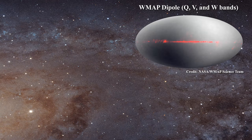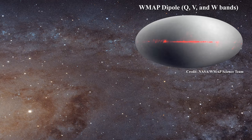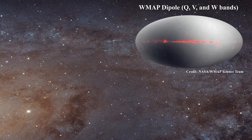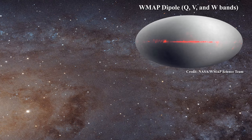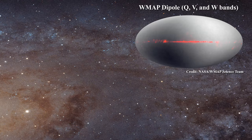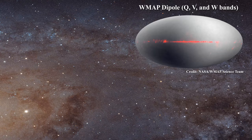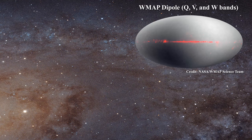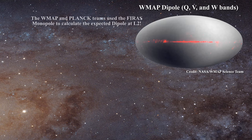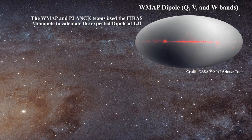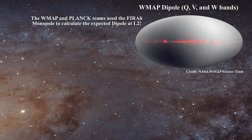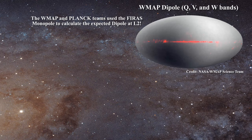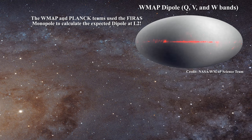After all, the WMAP team does publish an image of the dipole. This image is only comprised of the highest three frequencies, namely Q, V, and W. They do not include data from the K and Ka bands, presumably because of intense galactic plane interference. But still, if the WMAP team has the dipole, why not calculate the monopole just like the COBE team did? The answer is simple: the WMAP and Planck teams use the COBE FIRAS monopole value to calculate the expected dipole at L2. They then use the calculated dipole to calibrate each of their frequency channels. So the image above comes after calibration based on a monopole as measured by FIRAS, which is why it cannot be used to measure the monopole.